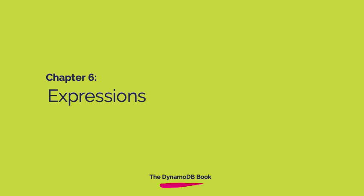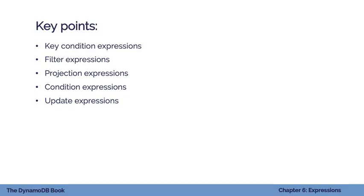This is chapter six where we're going to talk about expressions in DynamoDB. We've seen a few examples already, and now we're going to do a deep dive on all the different types. There are five different types of expressions. The first three are read-based expressions that happen on read operations. Finally, we have two write-based expressions used on write-based operations.